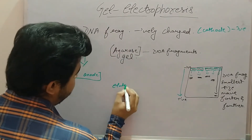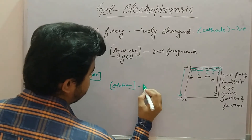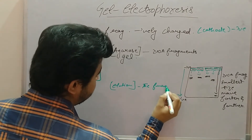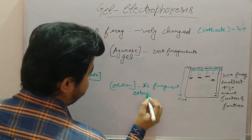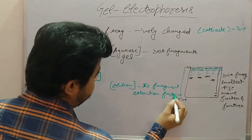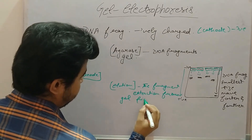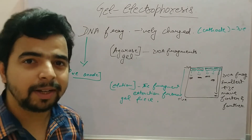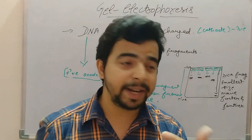Elution means the extraction of fragments from the gel piece. According to our need, we extract the desired fragment and use it for recombinant DNA.